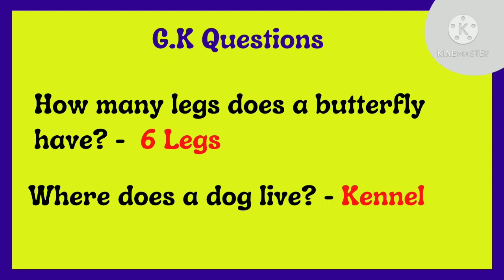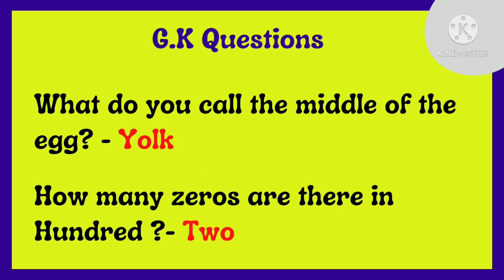How many legs does a butterfly have? 6 legs. Where does a dog live? Kennel. What do you call the middle of the egg? Yolk.